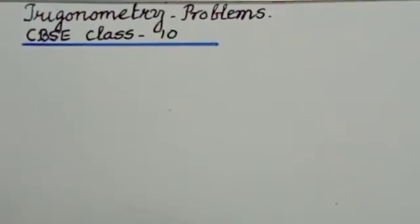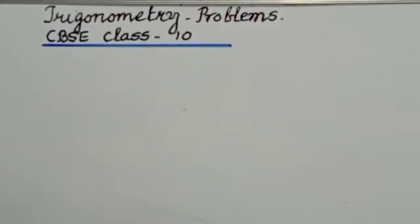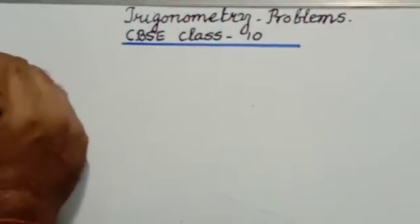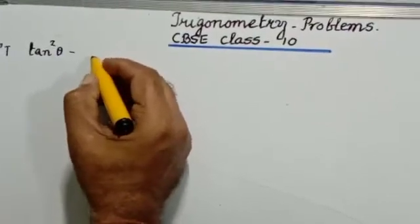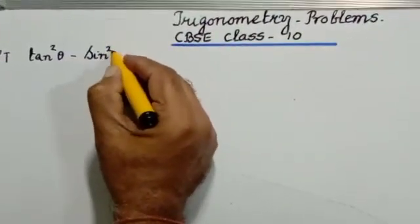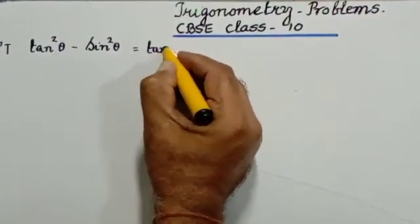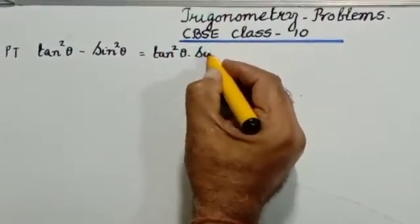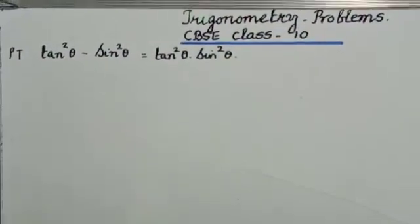The first problem for today is to prove that tan squared theta minus sin squared theta is equal to tan squared theta into sin squared theta. This is what we are supposed to prove.